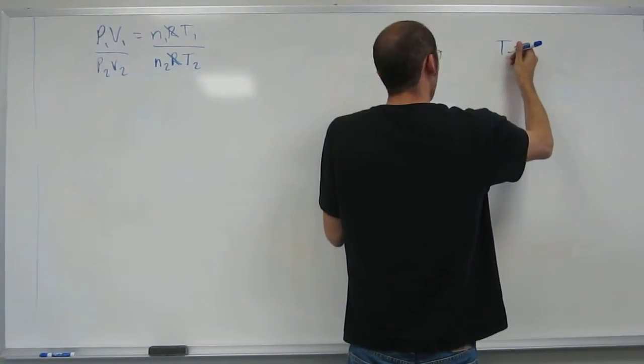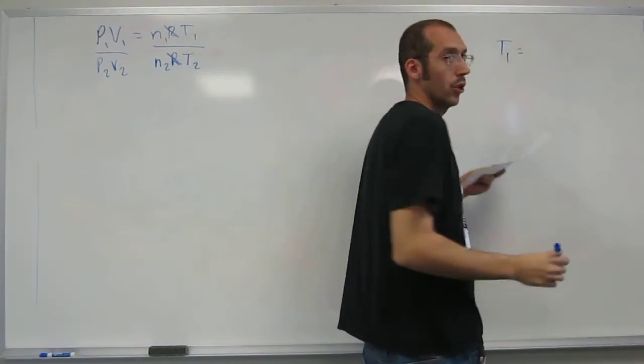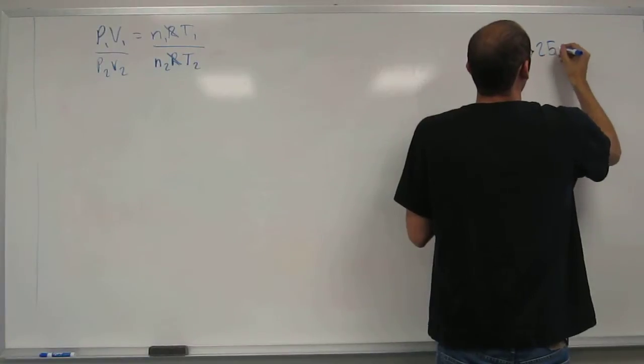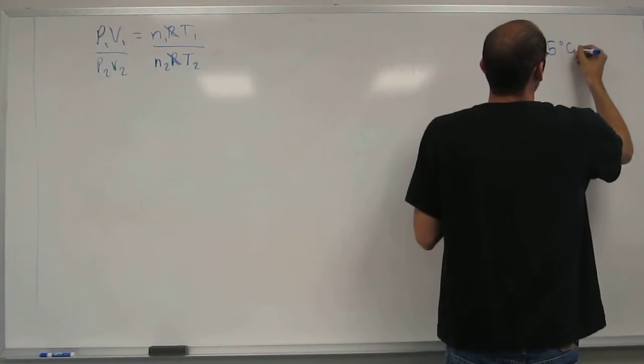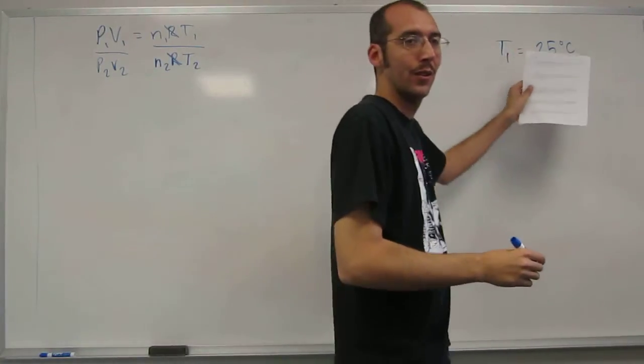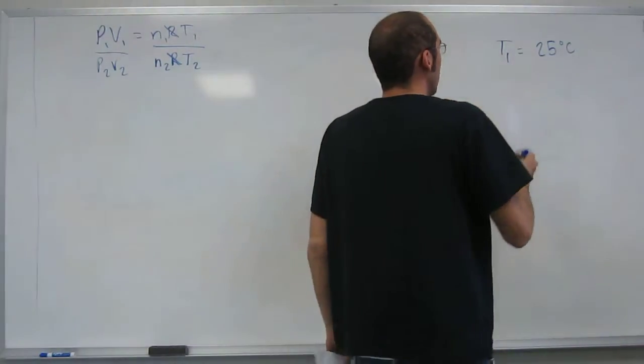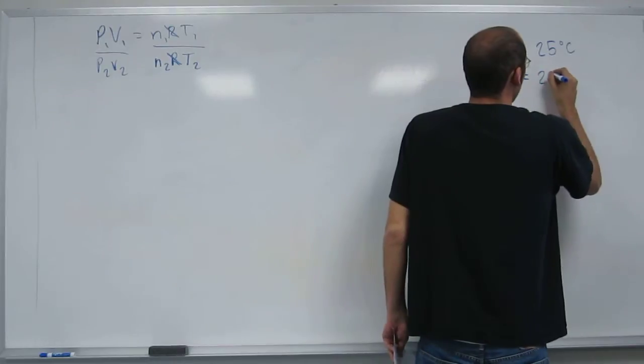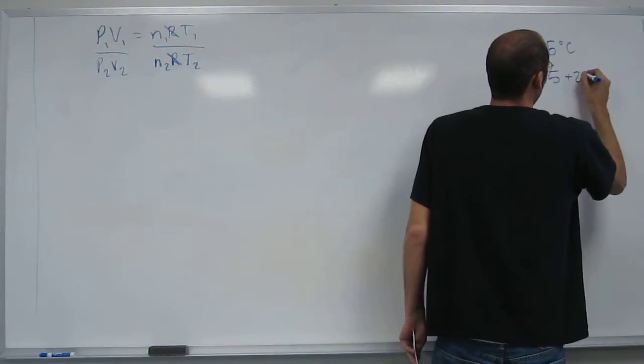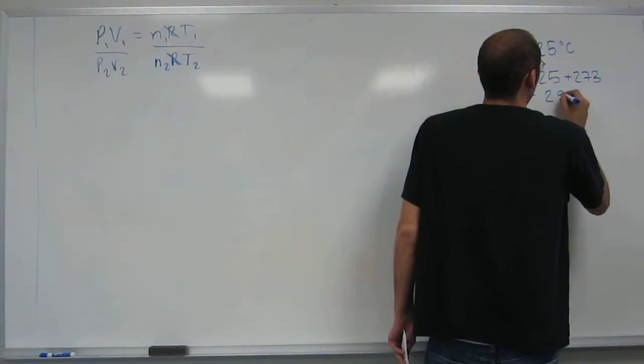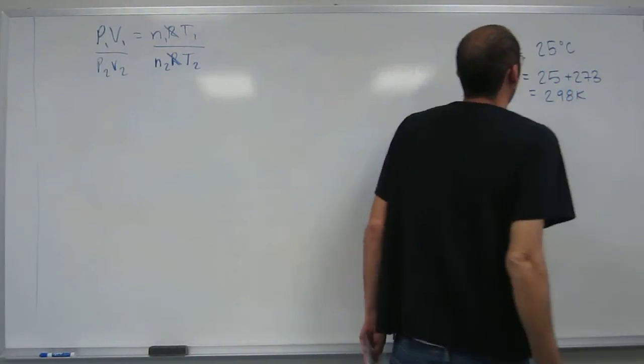So T1 is the initial temperature, and it says that's room temperature, 25 degrees Celsius. But you can't use degrees Celsius. What do you got to use? Kelvin. Kelvin. And how do you get that from degrees Celsius? Plus 273. So 25 plus 273. What is that? 298. 298 Kelvin. Okay?